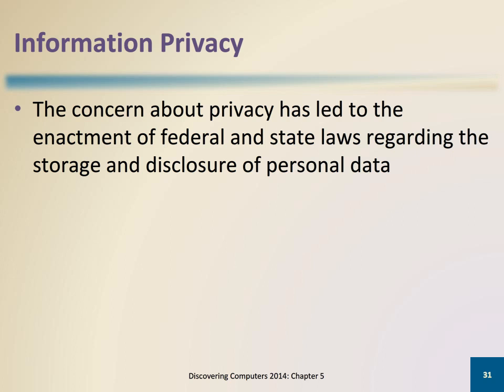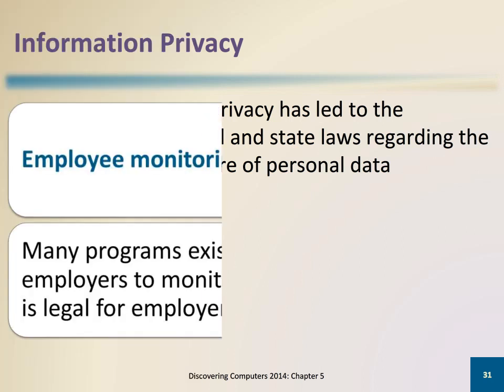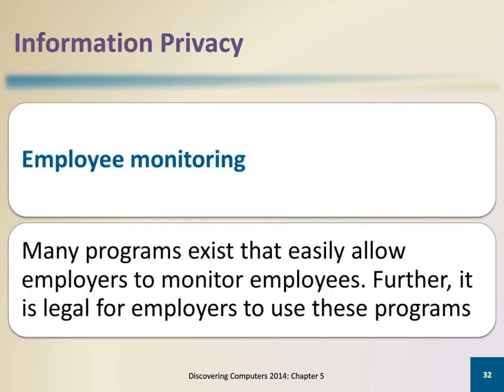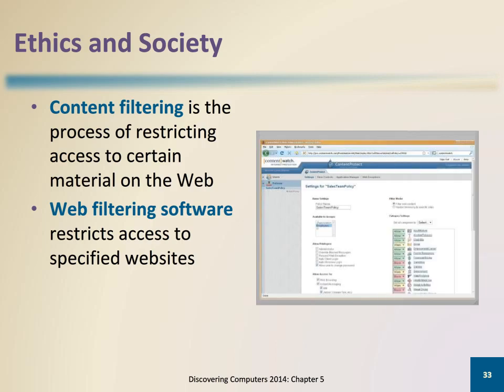Page 233 in your textbook provides a listing of the major US government laws concerning privacy. Employee monitoring involves the use of computers, mobile devices, or cameras to observe, record, and review an employee's use of technology, including communications such as email messages, keyboard activity, used to measure productivity, and websites visited. Many programs exist that easily allow employers to legally monitor employees. Businesses use content filtering. Content filtering is the process of restricting access to certain material on the web. Web filtering software also restricts access to specified websites.